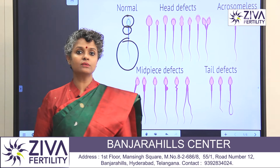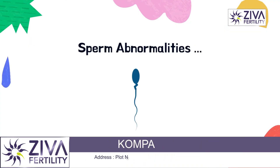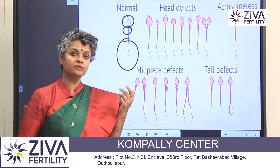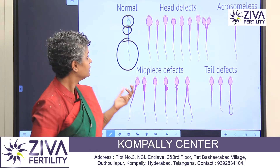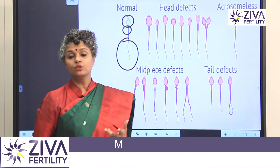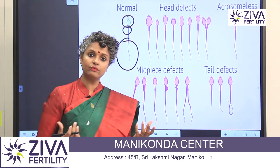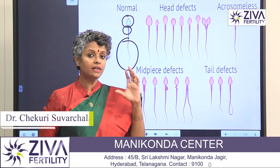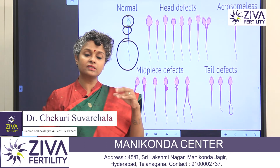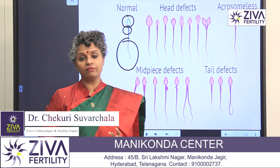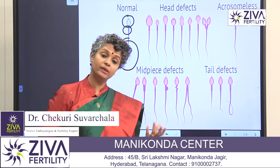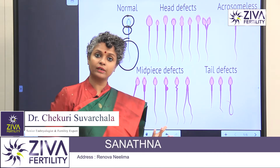Let's talk about some abnormalities. There are three parts to a sperm: the head, the mid-piece, and the tail. So we are looking at three kinds of defects: does the head have more defects, does the tail have more defects, or does the mid-piece have more defects?